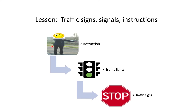Let's see the answer. The first priority — at the top of the hierarchy — is instructions. If you see an authorized person asking you to stop, then irrespective of the traffic light and irrespective of the traffic sign, you simply have to stop.